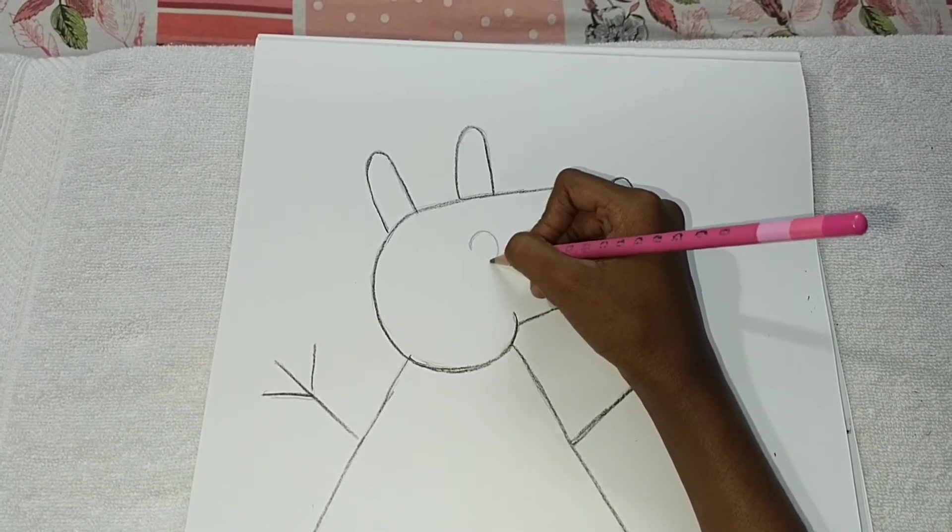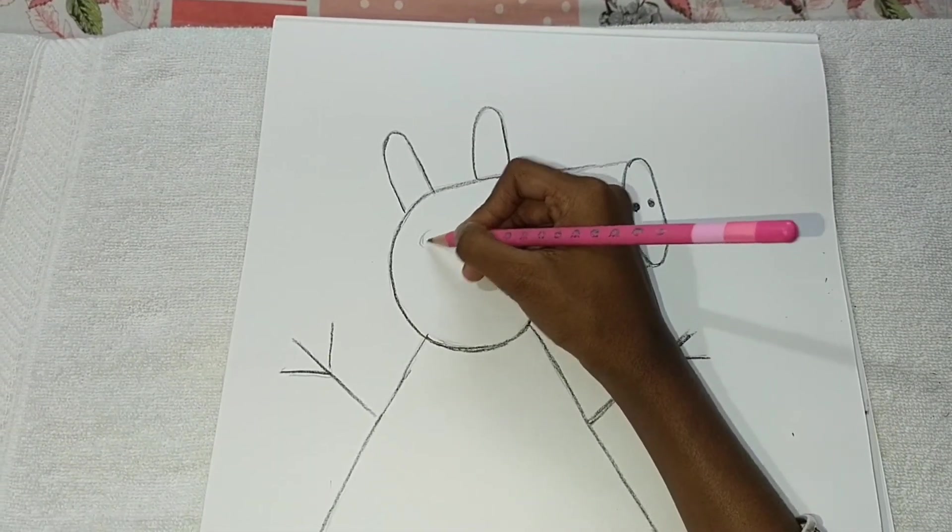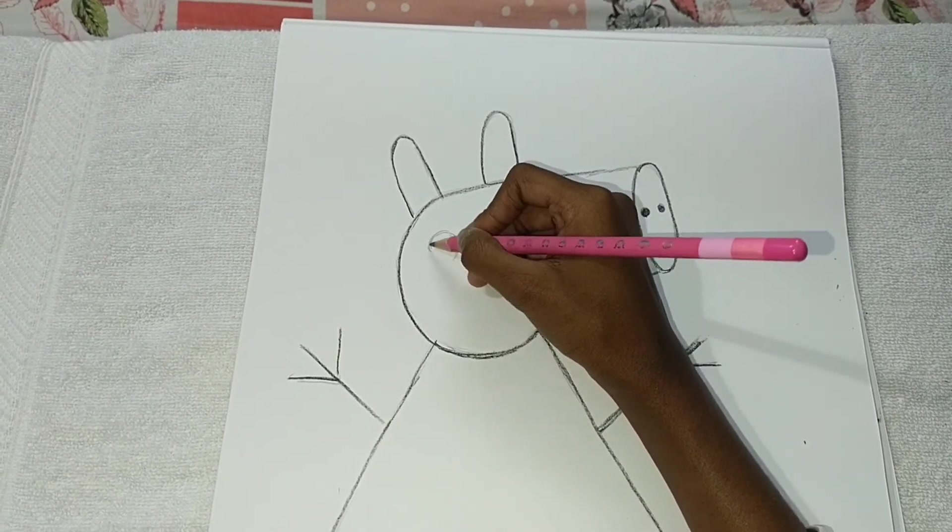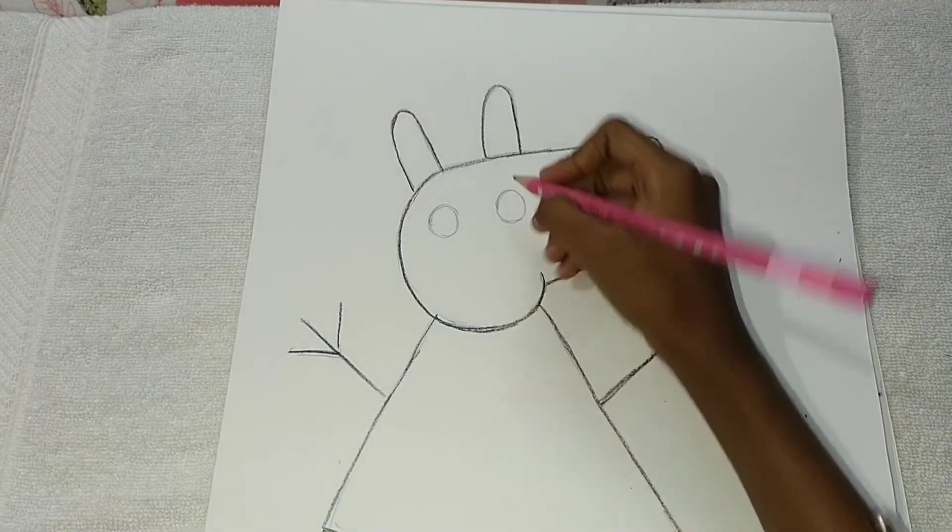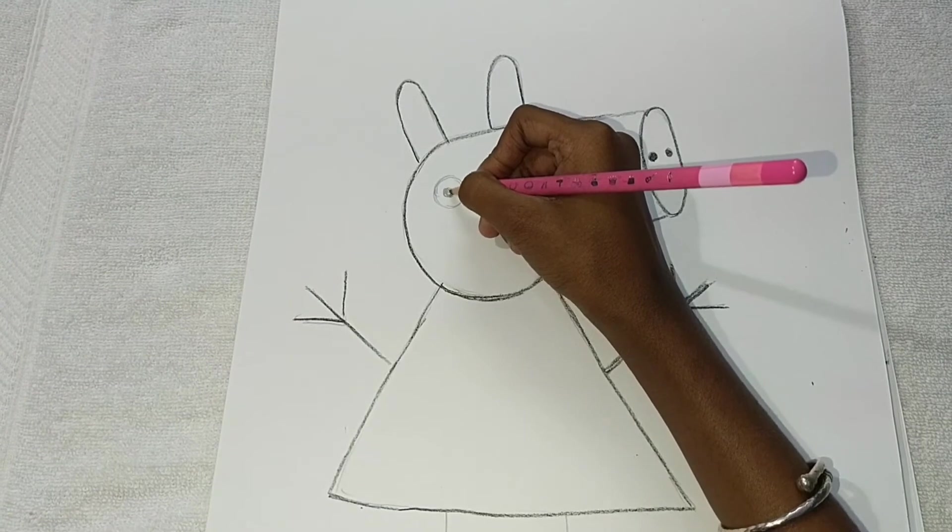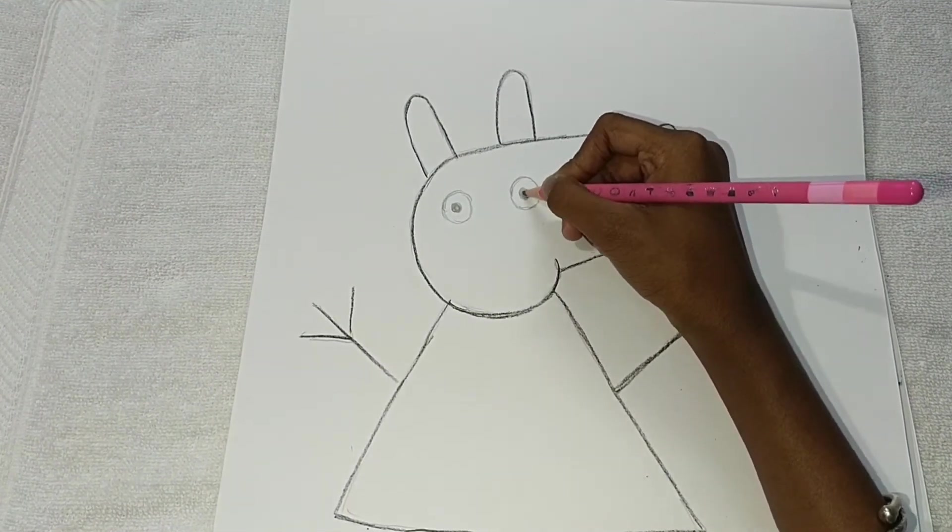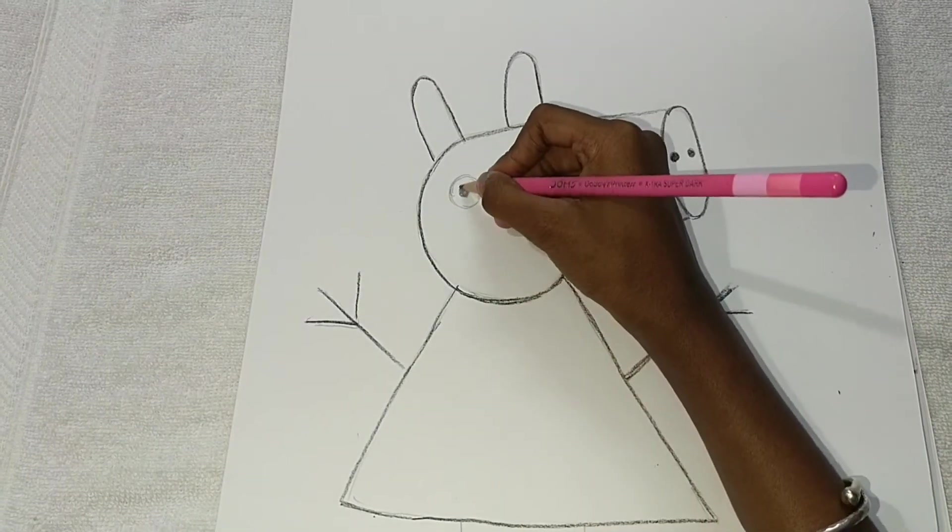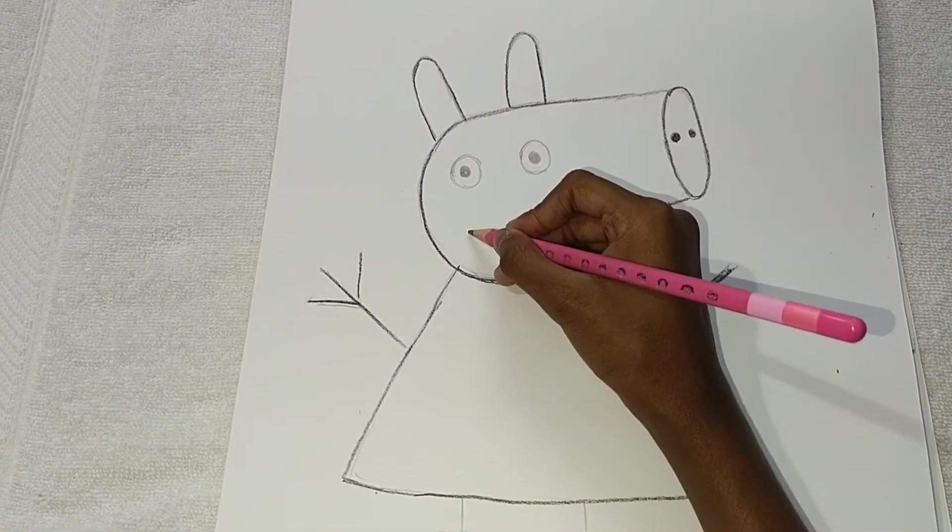Draw the eyes of the Peppa Pig, round eyes, and then they are red and brown and just do black. Then I draw the white. That's fine.